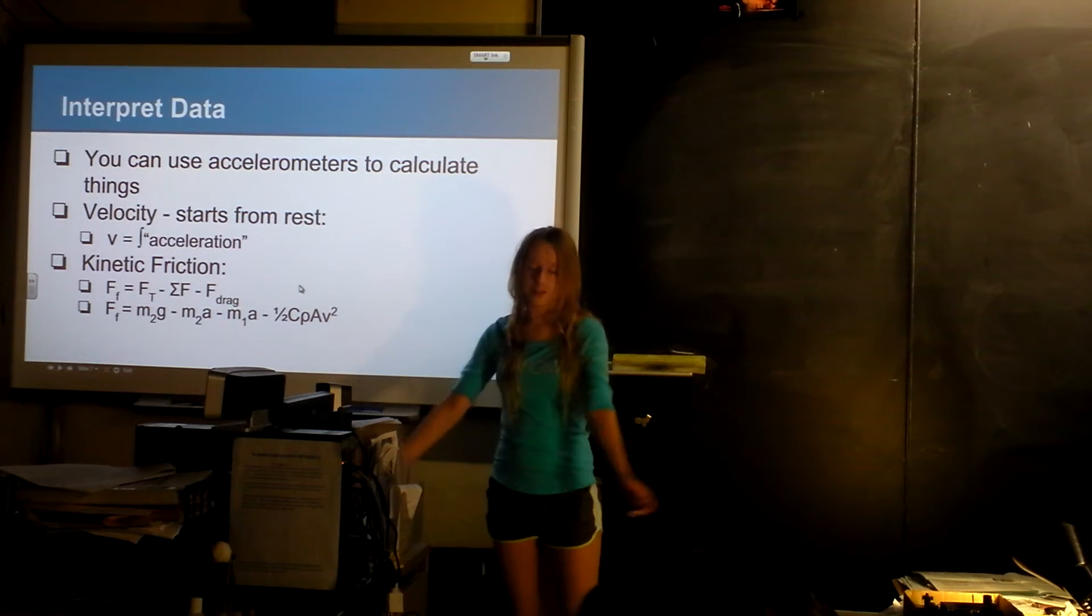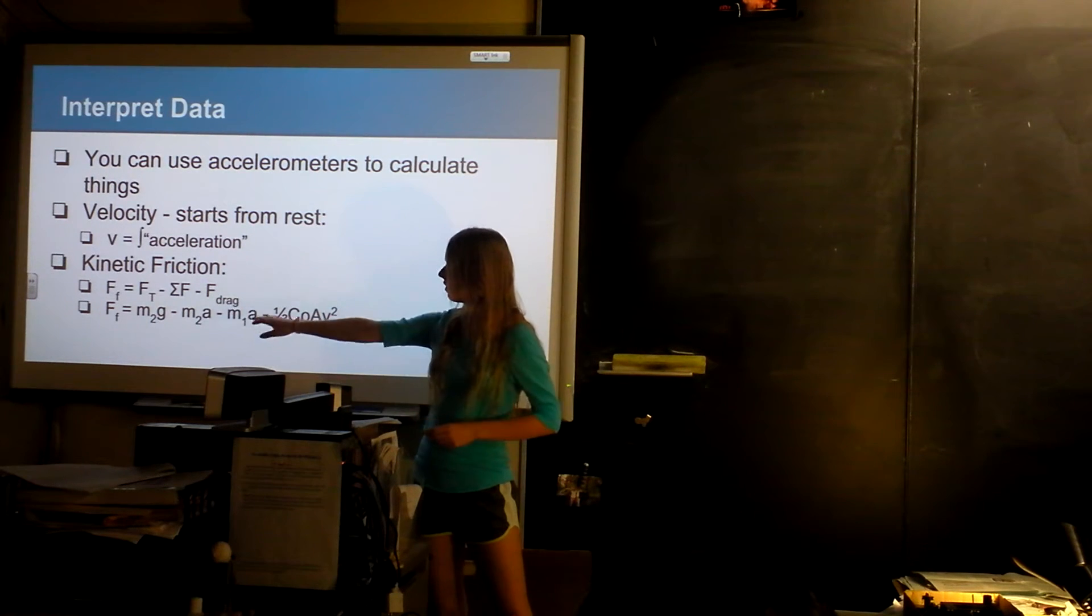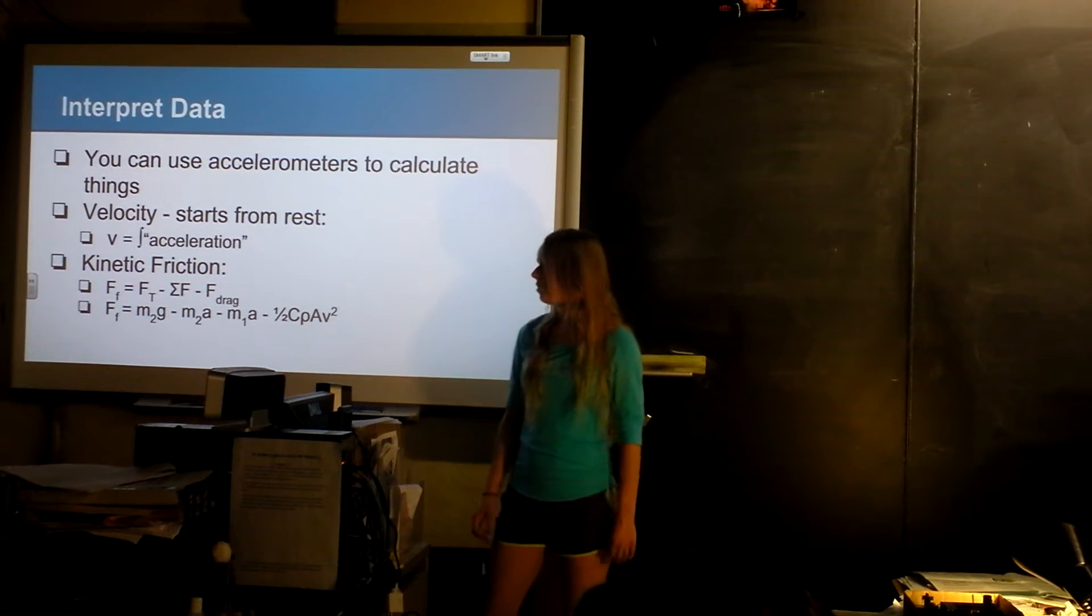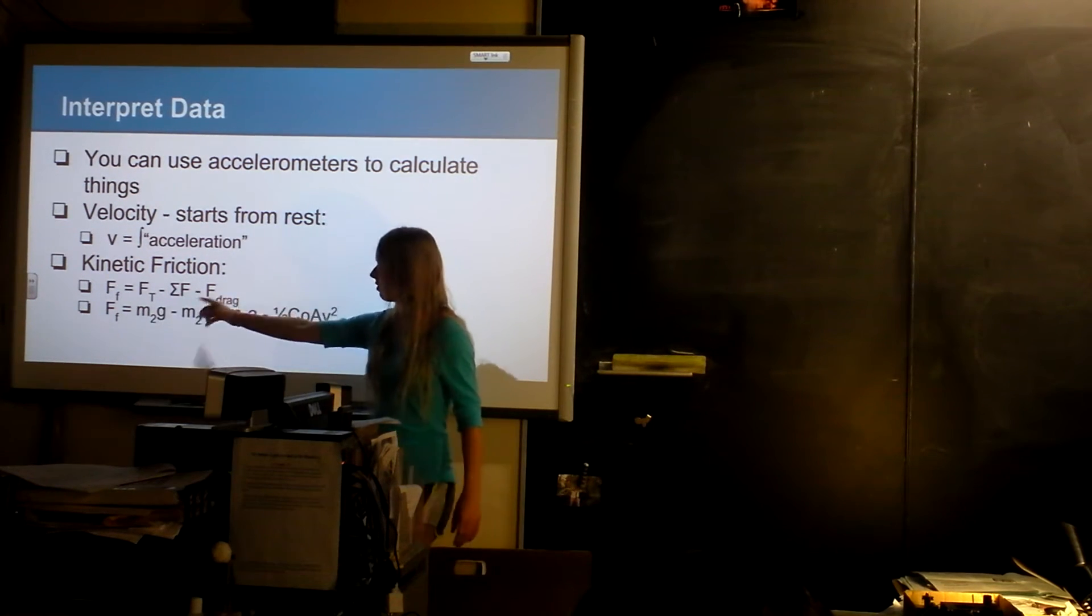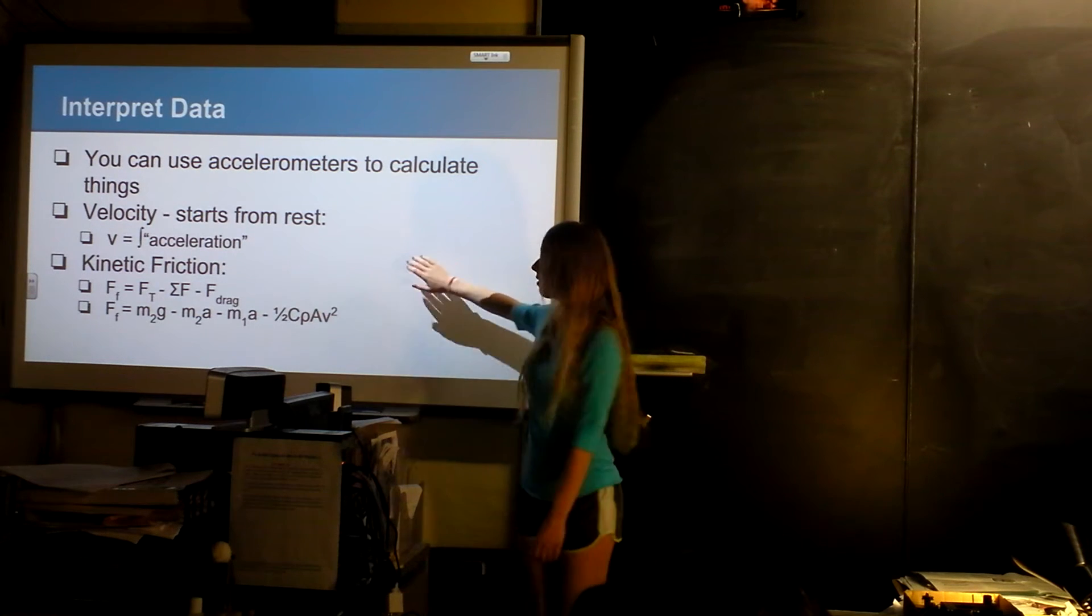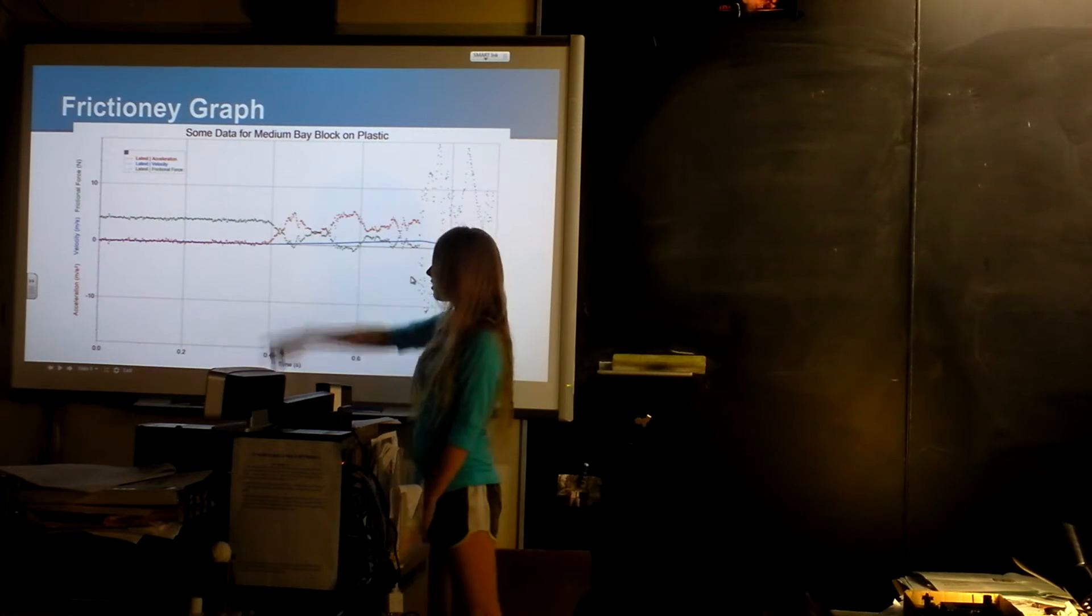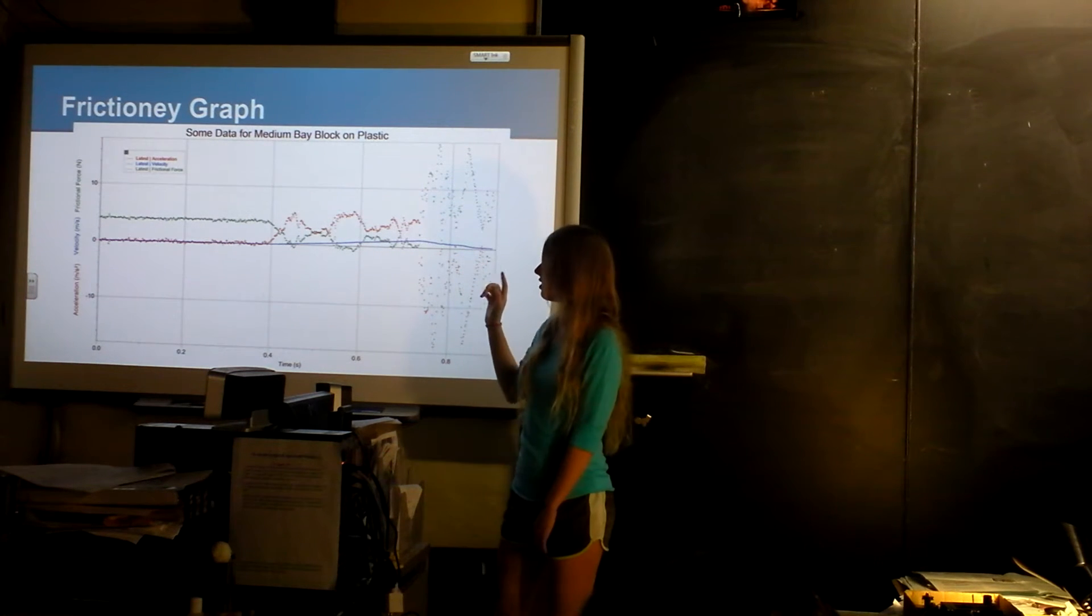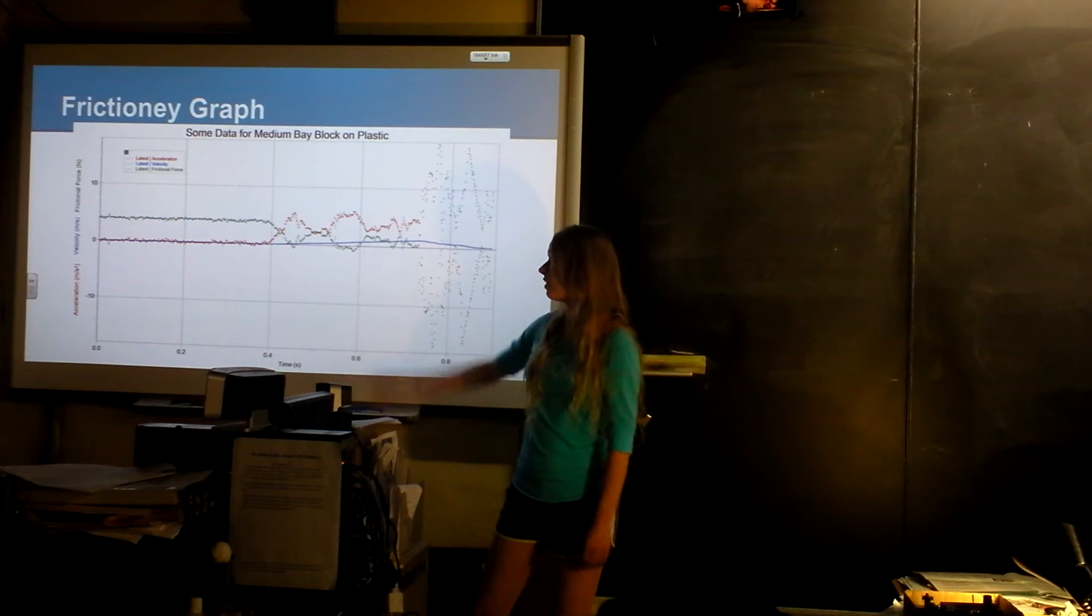Once I got the data for acceleration, I calculated velocity, which is just the integral of acceleration. Then I made this really confusing equation for the force of friction at each point. It's basically the tension minus the measured force minus the drive force, so I wouldn't be getting other forces in the way when trying to figure out what was going on with friction. The red is the acceleration, which has more amplitude than the green, which is the force of friction. And then the blue line is the velocity.